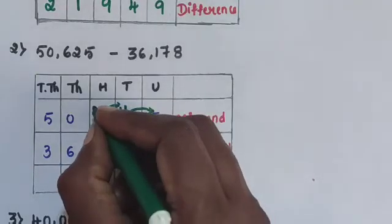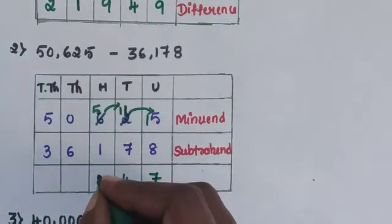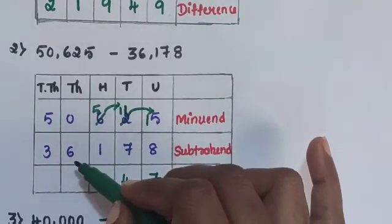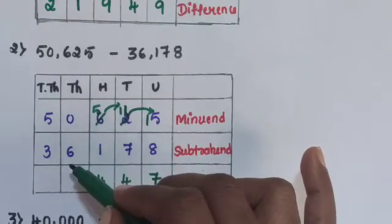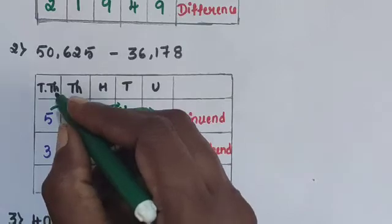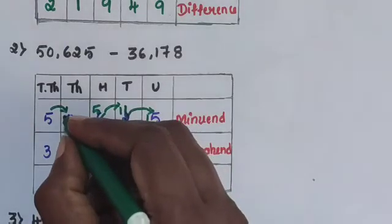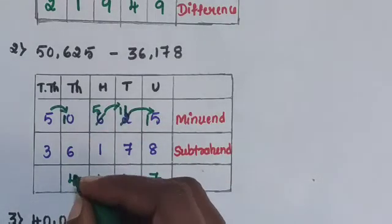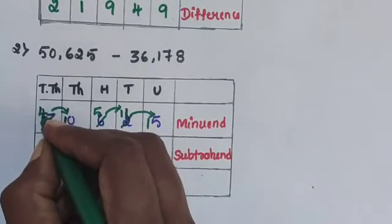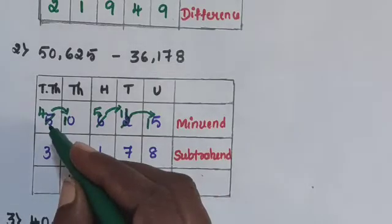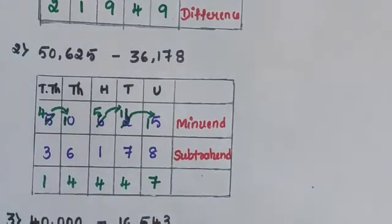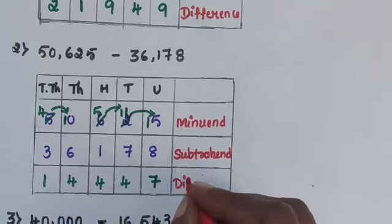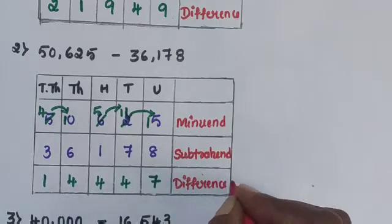The remaining value in the hundreds place is 5. 5 minus 1 is 4. Next, subtract in the thousands place: 0 minus 6 — 0 is smaller than 6. Take a carry from the ten-thousands place; make it 10. 10 minus 6 is 4. The remaining ten-thousands digit is 4. 4 minus 3 is 1. The difference of these two numbers is 14,447.